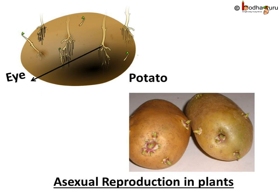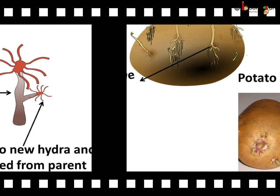A potato plant can also reproduce through buds. The eyes on potatoes are actually buds — you must have seen a new plant growing from the eye of a potato. The same kind of asexual reproduction is also observed in animals.